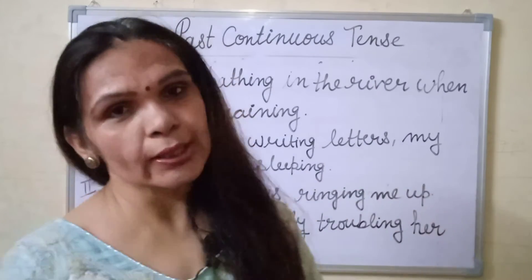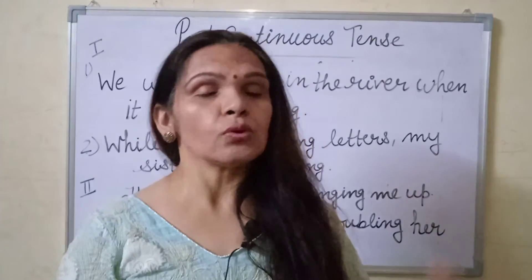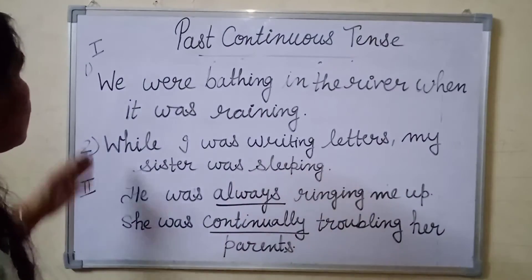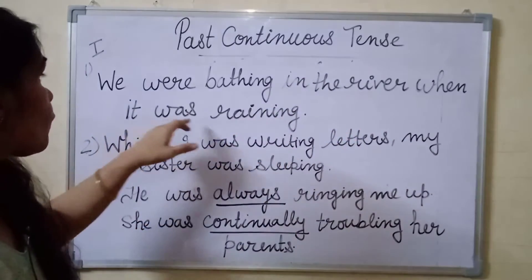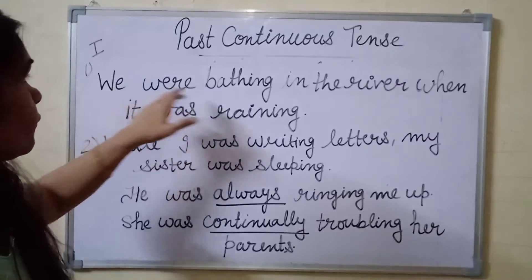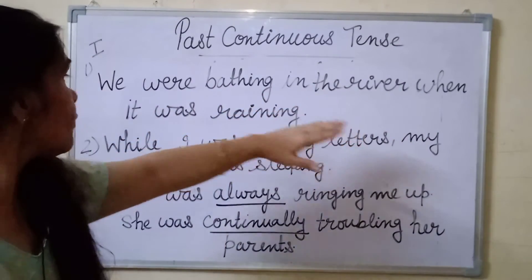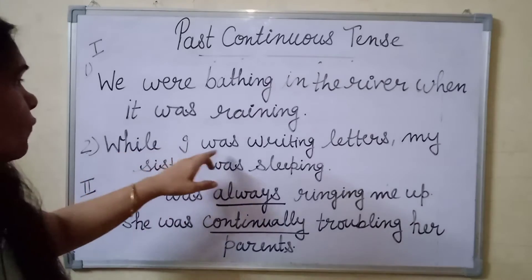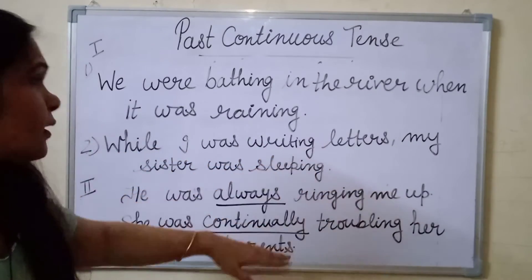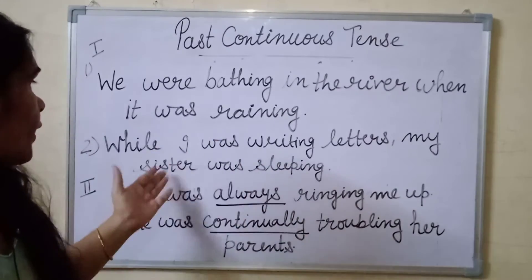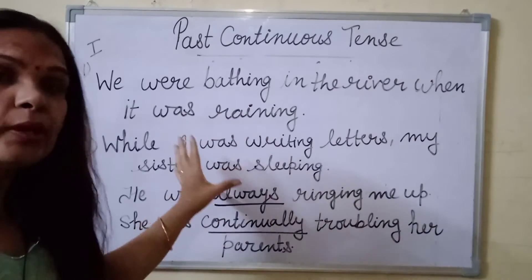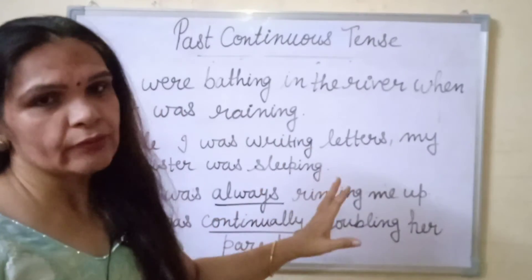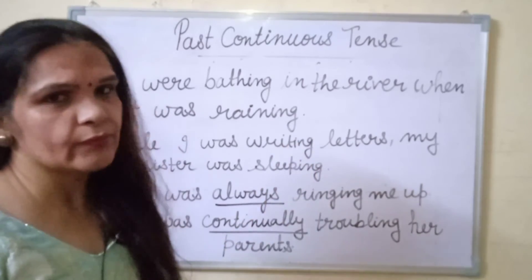Now I am going to tell you about sentences where two actions are performing together — both sentences are in Past Continuous Tense. For example: We were bathing in the river when it was raining. While I was writing letters, my sister was sleeping. These two actions are performing at the same time, so both are counted as Past Continuous Tense.